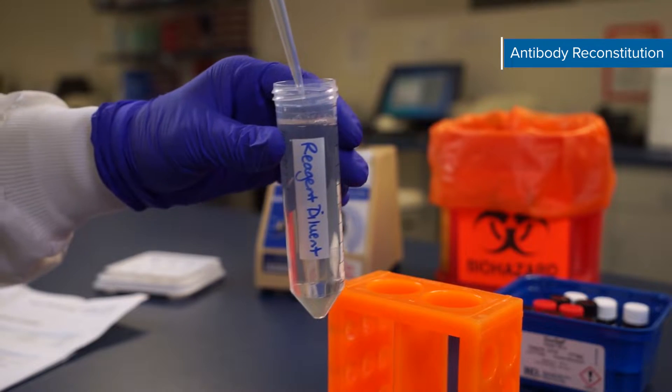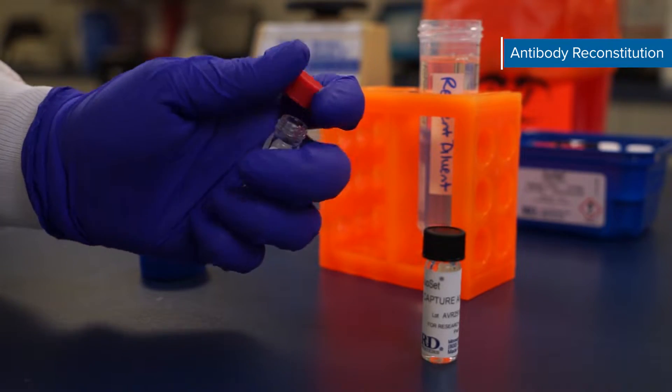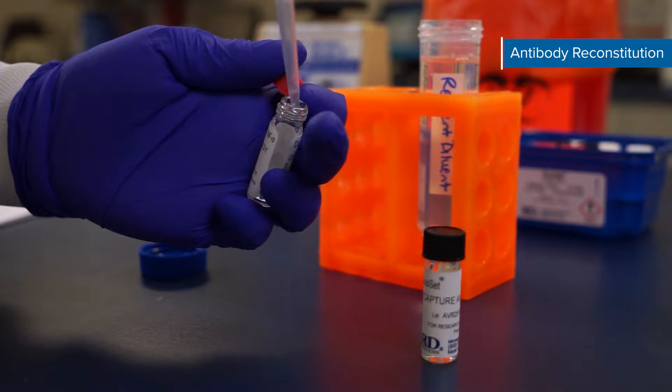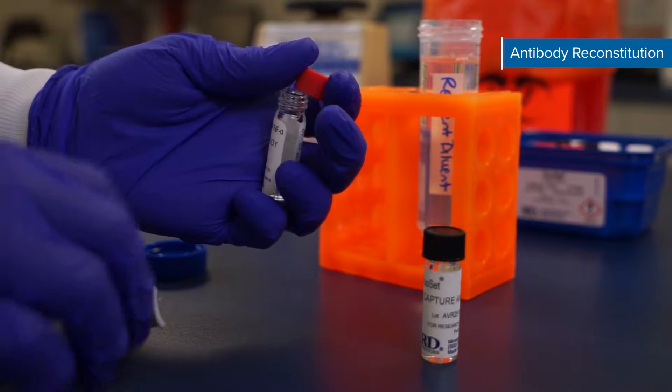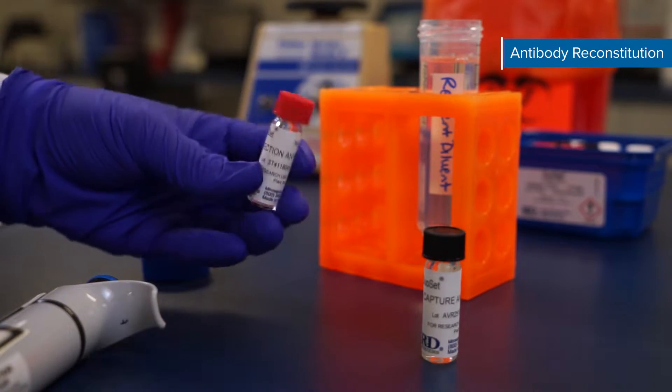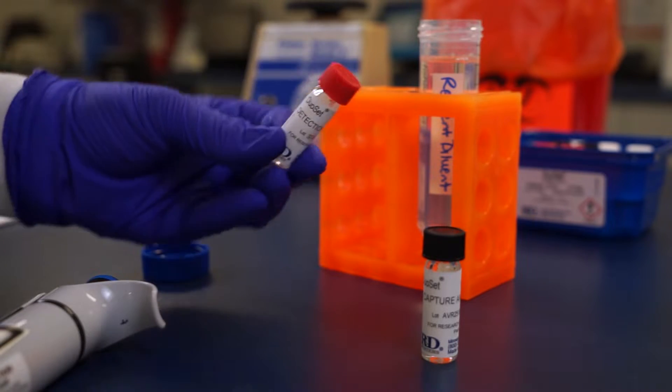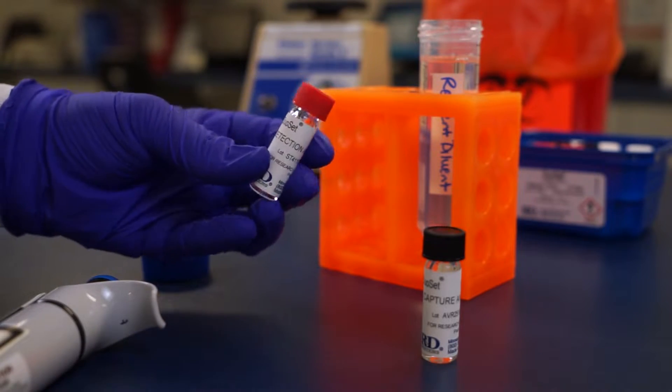First reconstitute both lyophilized antibodies. Avoid vigorous mixing of the vials. Allow the capture antibody to sit for a minimum of 15 minutes before coating your plates or preparing single-use aliquots for storage. Store the detection antibody overnight at 4 degrees Celsius before aliquoting. Refer to the certificate of analysis for storage temperatures.